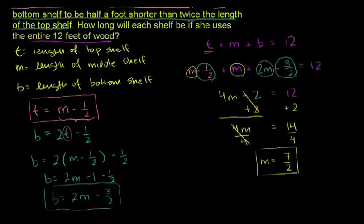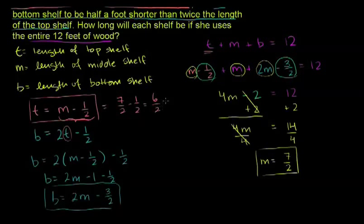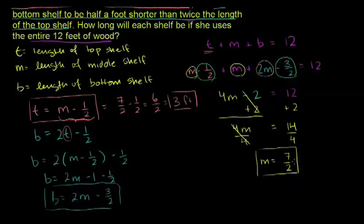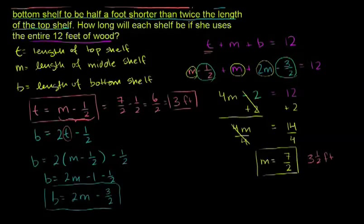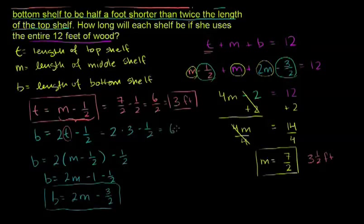Solving for T: T = M - 1/2 = 7/2 - 1/2 = 6/2 = 3 feet. So the top shelf is 3 feet and the middle shelf is 7/2 = 3 and 1/2 feet. For the bottom shelf: B = 2 times the top shelf minus 1/2 = 2(3) - 1/2 = 6 - 1/2 = 5 and 1/2 feet.